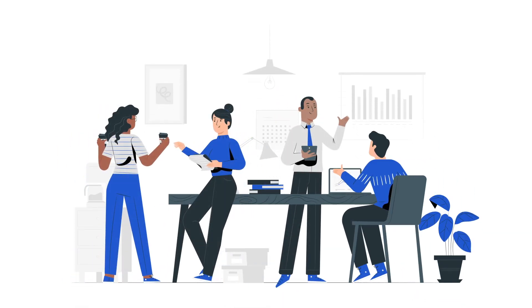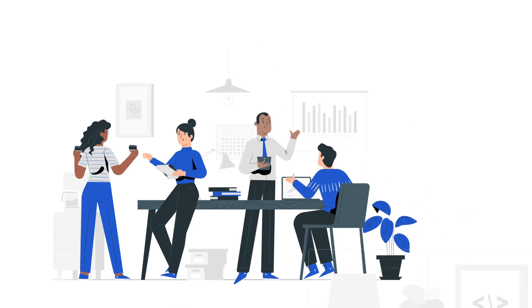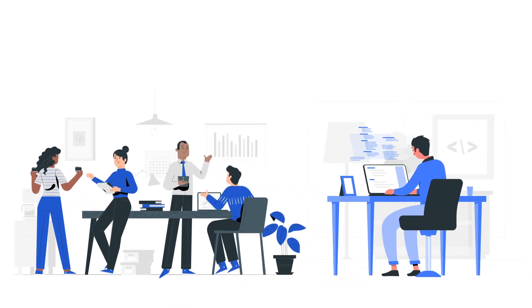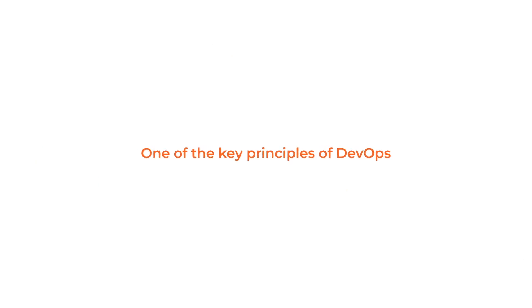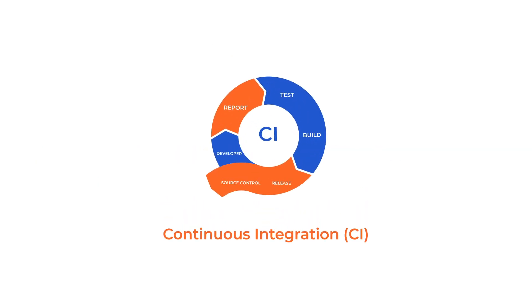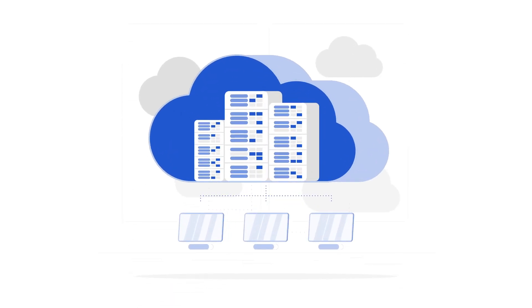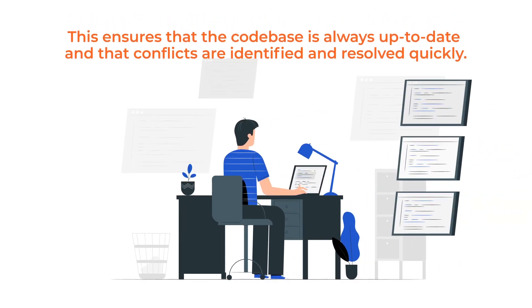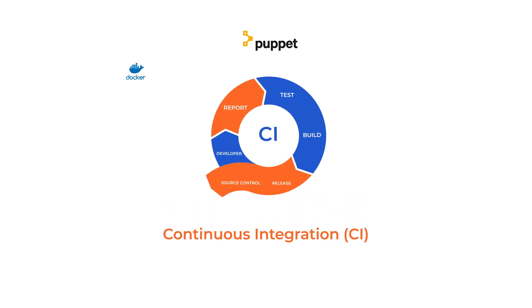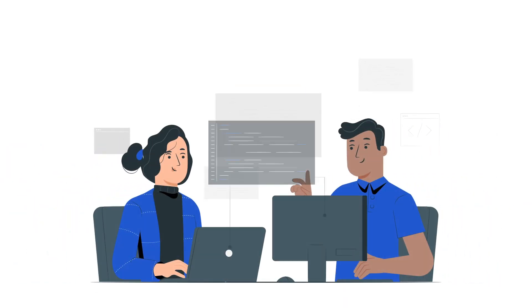DevOps practitioners, on the other hand, focus on the entire software development lifecycle, including the development, deployment, and operation of software applications. They work closely with software developers to ensure that the code is integrated and tested continuously, making it easier to deploy and maintain. One of the key principles of DevOps is continuous integration, CI, which is the practice of frequently integrating changes made by developers into a central repository. This ensures that the code base is always up to date and that conflicts are identified and resolved quickly. Continuous integration is made possible by automated testing tools and processes that allow DevOps practitioners to identify issues early in the software development process.